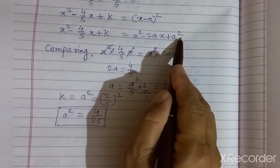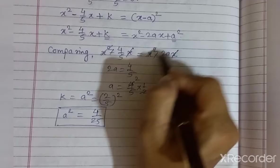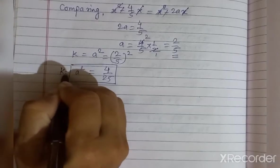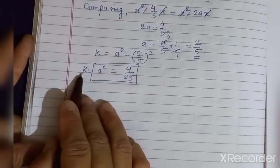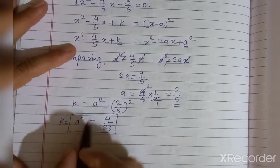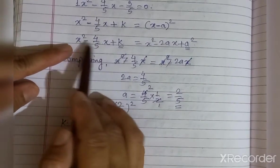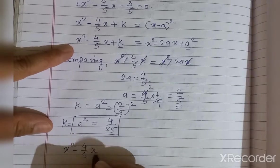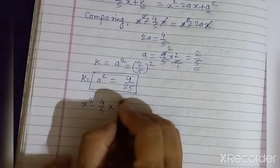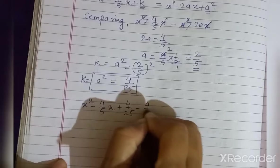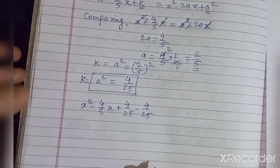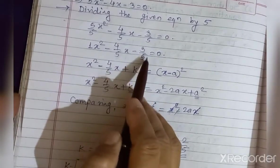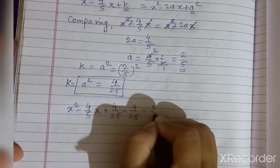k is equal to a², which is the third term we need. Now rewrite the equation: take the first two terms x² minus (4/5)x, then add 4/25 and subtract 4/25 to keep the equation balanced, and keep the constant term minus 3/5 as it is, equal to 0.